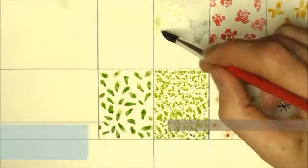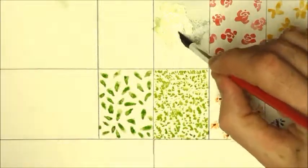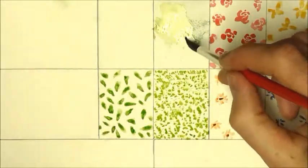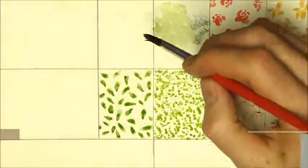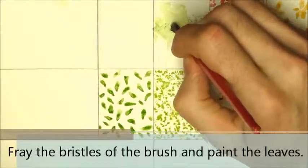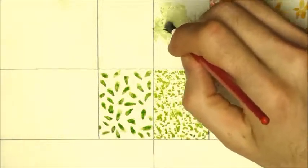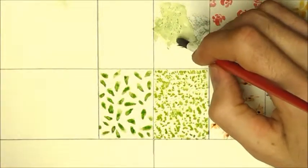For the tree in the middle ground, go over it with a light green wash, wait for it to dry, then add leafy texture by spreading the bristles and dabbing them on the tree.